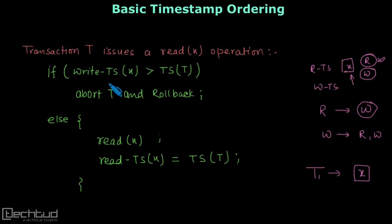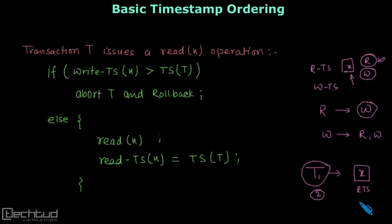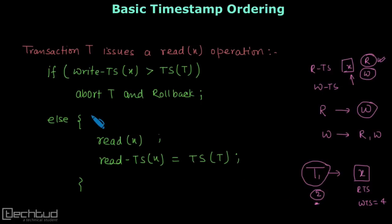First it will check whether the write timestamp of variable x is greater than the transaction's timestamp. The transaction's timestamp is assigned when the transaction starts — let us say it started at 2. If the write timestamp is, say, 4, this condition is true: write timestamp is greater than the timestamp of the transaction. In that case we abort the transaction and roll back.